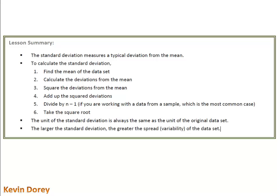In summary, here's what we should know. The standard deviation measures a typical deviation from the mean. Remember, the heights of the typical dogs. We can calculate a standard deviation by following a few simple steps. The unit of the standard deviation is always going to be the same as the units of the original set. When we were talking about the dogs, the units were millimeters. When we were talking about the batteries, the units were hours. The larger the standard deviation, the greater the spread, or the variability, of the data set is. This is a great way to talk about the variability of two sets whenever the data is symmetric.